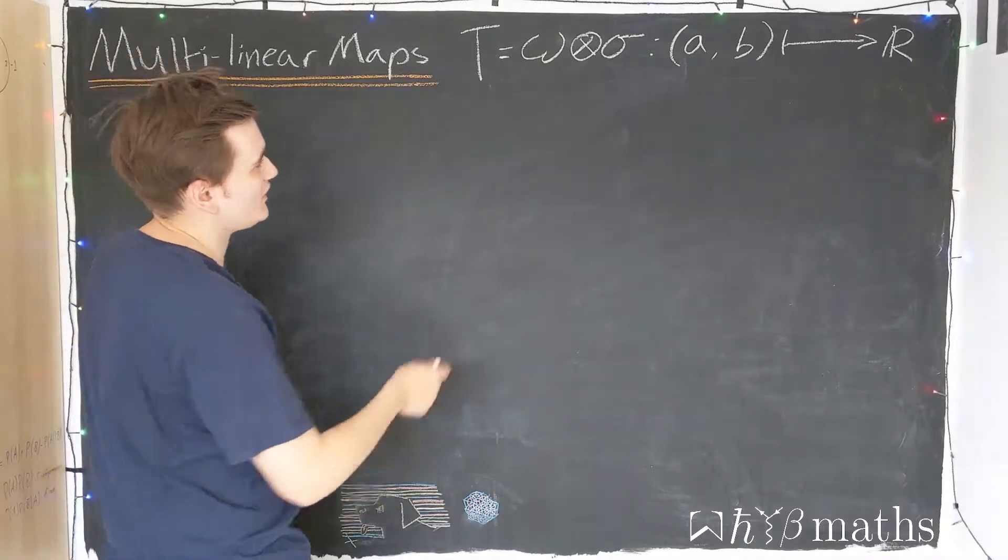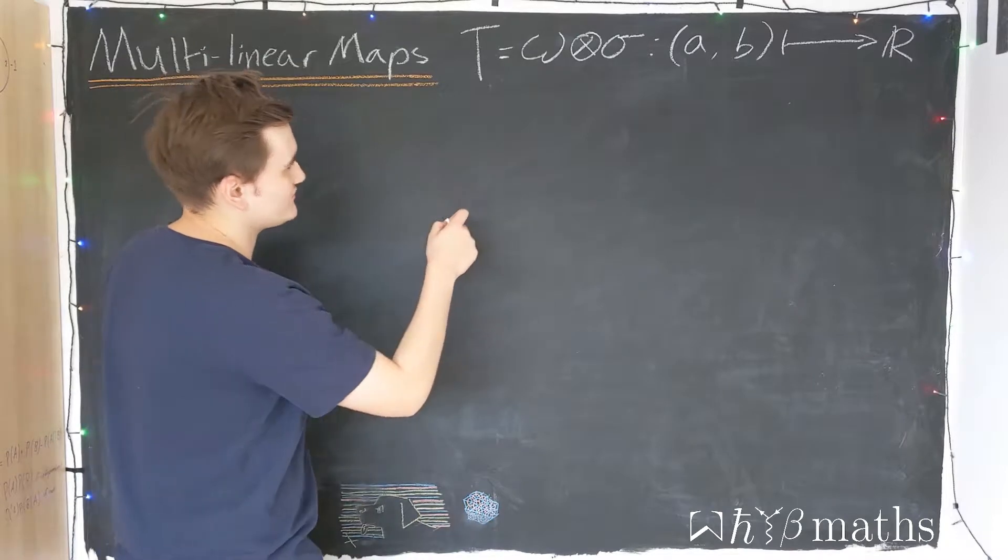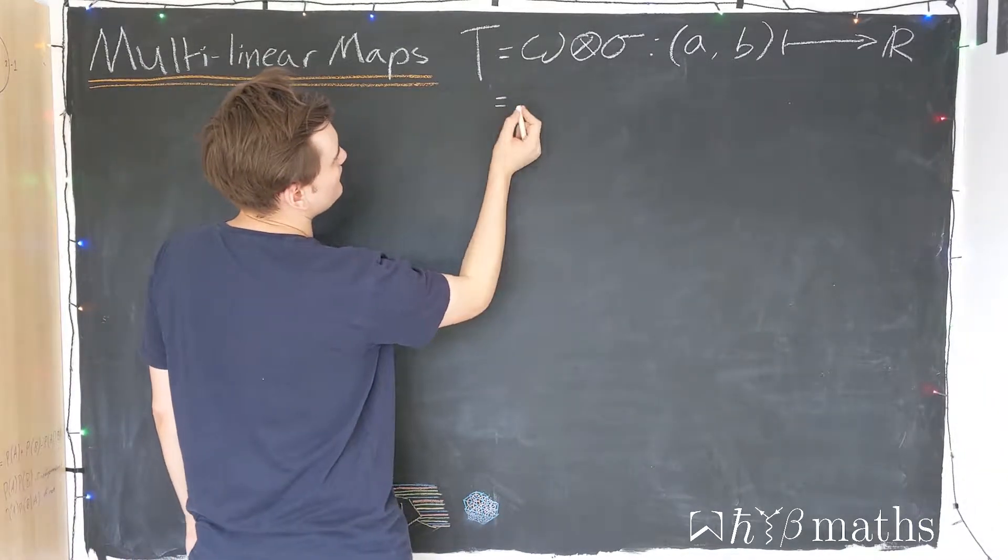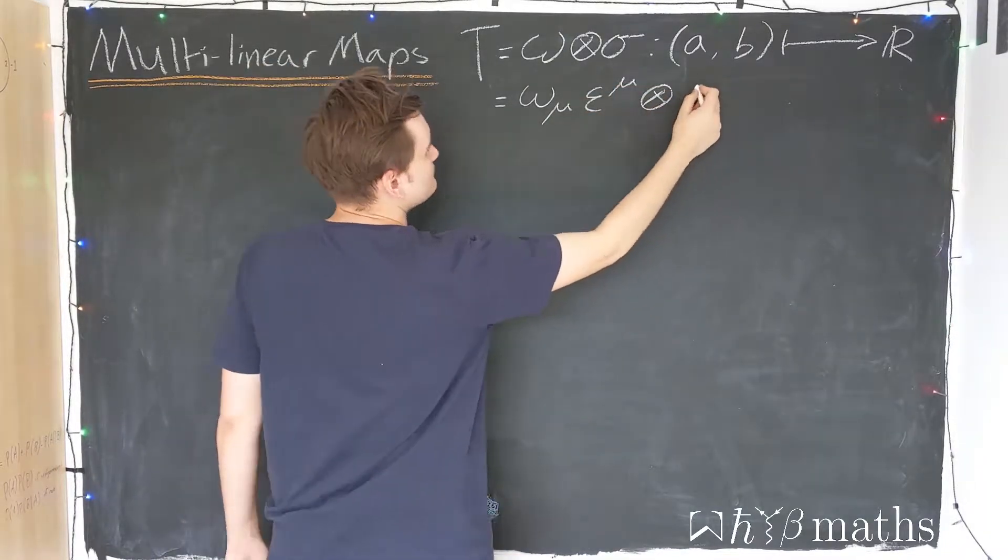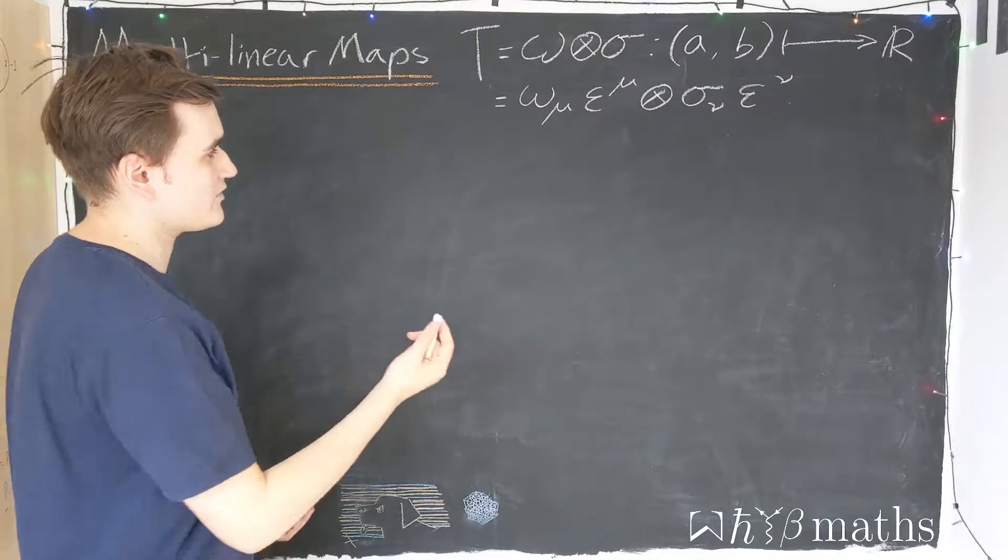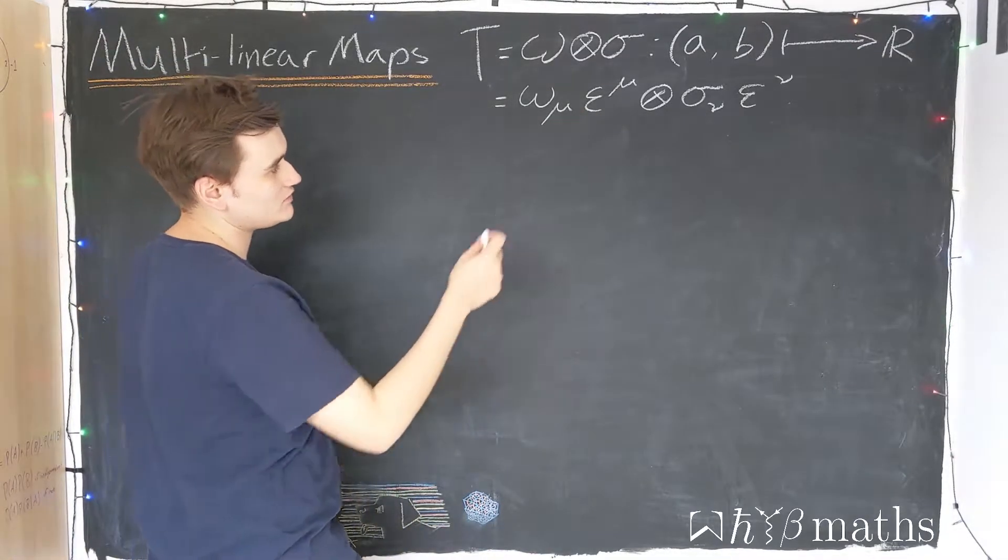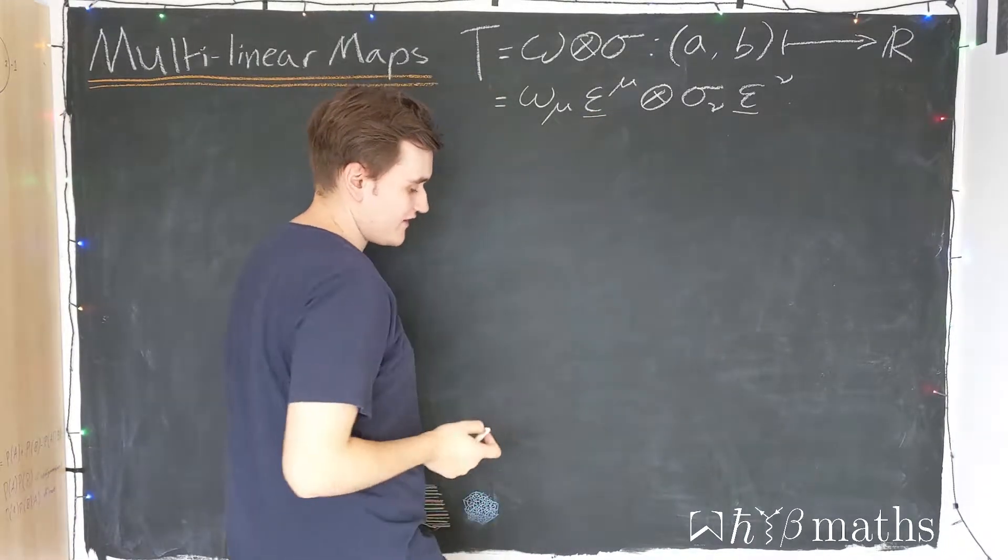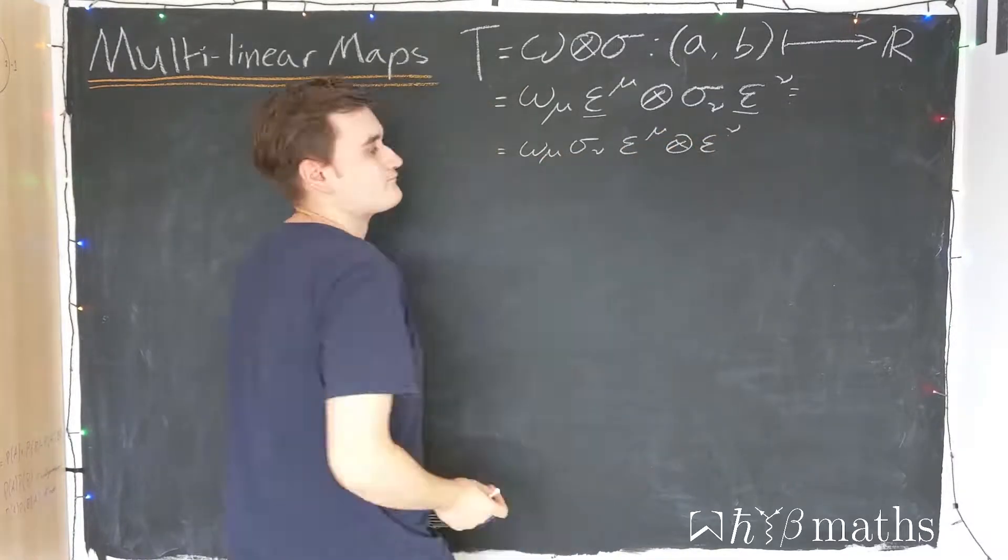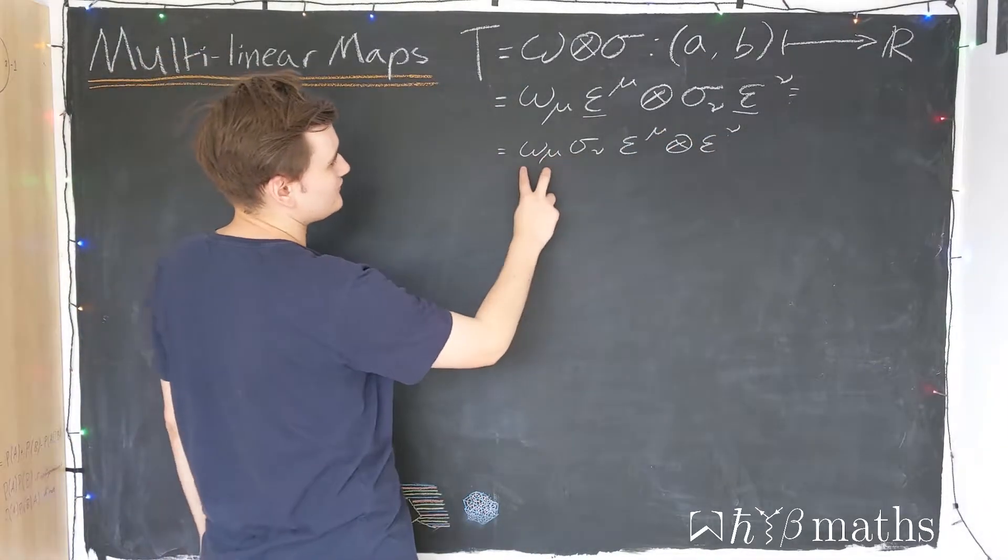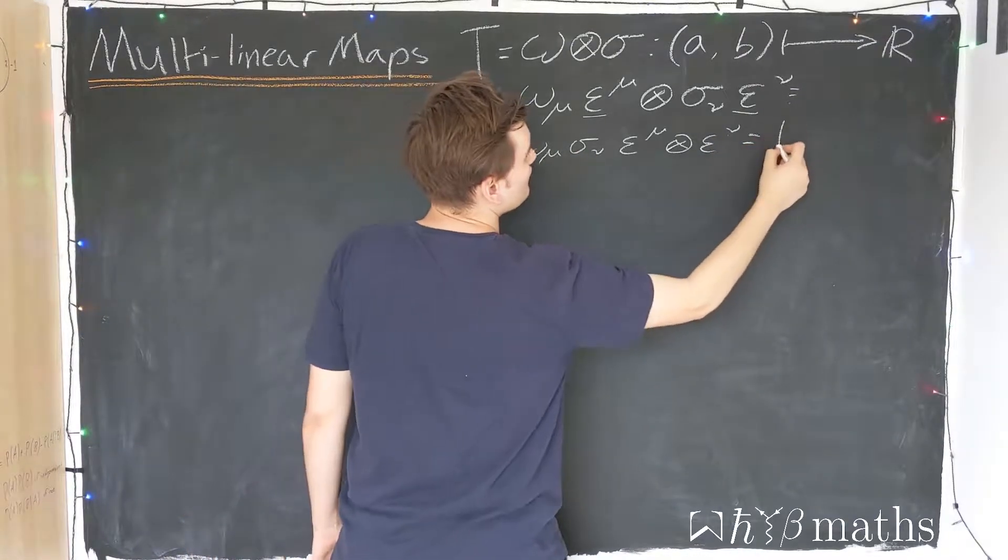So then, since we know that these dual vectors live in a dual space, we can define or express them in terms of their components on a particular basis. And now, because this is just a multilinear map, these scalars can be effectively pulled out and we can just single out the vector part. And now we frequently abbreviate these two components into a single object which has two indices.